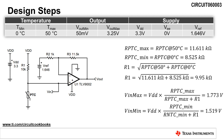Now that we know the input voltage divider resistances, the next step is to calculate the maximum and minimum input voltage range. The maximum input voltage is calculated using the PTC resistance at 50 degrees Celsius, and the minimum input voltage is calculated using the PTC resistance at 0 degrees Celsius. The maximum input voltage is calculated to be 1.773 volts, and the minimum input voltage is calculated to be 1.519 volts.